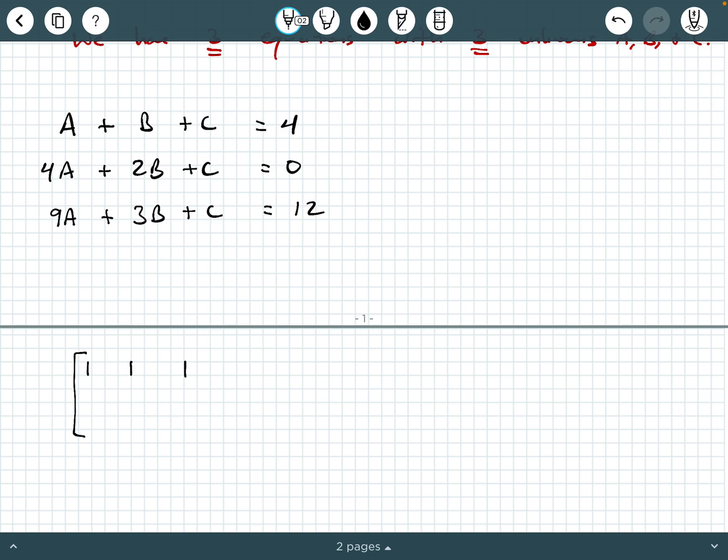So we've got the coefficients 1, 1, 1, and 4 here. And then we have 4, 2, 1, 0. And then I have 9, 3, 1, 12.